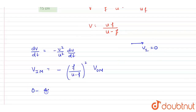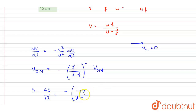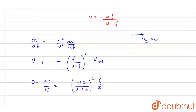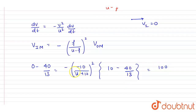So I write: 0 − 40/13 = −(f/(u−f))² × (object velocity with respect to mirror). We already calculated f = −10. So substituting: −40/13 = −(−10/(u−(−10)))² × (10 − 40/13). This gives −40/13 = −100/(u+10)² × (90/13), which simplifies to −40/13 = −(900/13) / (u+10)².